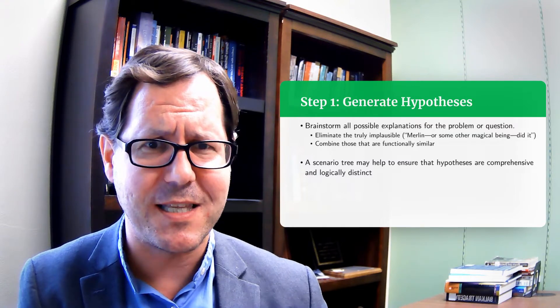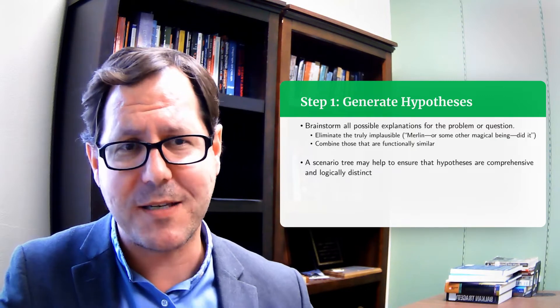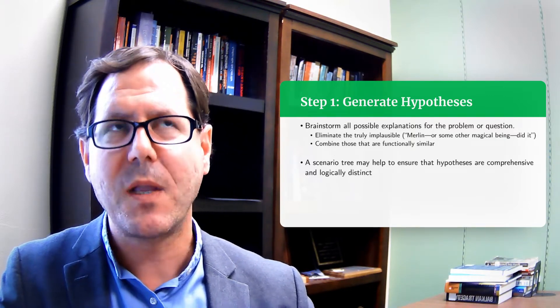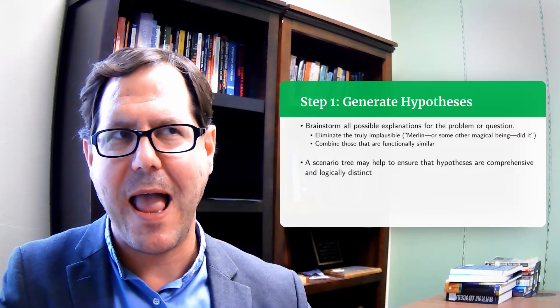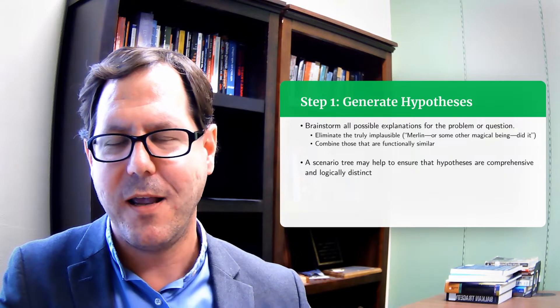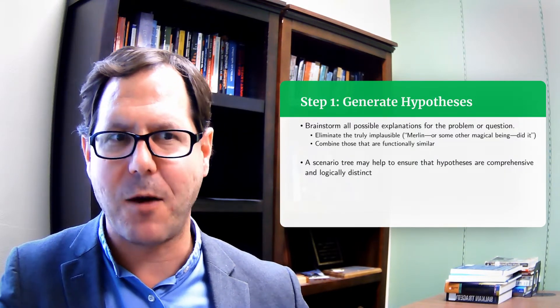Typically what we do is we identify a particular hypothesis or expectation and then try to find evidence that says whether or not that is correct. But with the analysis of competing hypotheses, we're actually going to start by trying to come up with a comprehensive and exhaustive set of possible explanations that fills the entire policy space.